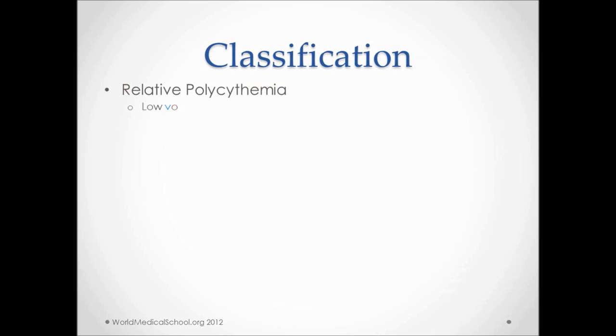Relative polycythemia, as we said earlier, is due to low-volume states. The problem is that the body is dehydrated and it seems that the hemoglobin and hematocrit are high, but really they are not. It's relative. Third spacing due to burns can cause low-volume states. Prolonged vomiting and diarrhea can lead to fluid loss from the GI tract. Too much diuretic use gets rid of excess water. Stress or Gaisböck syndrome may also lead to low-volume states.